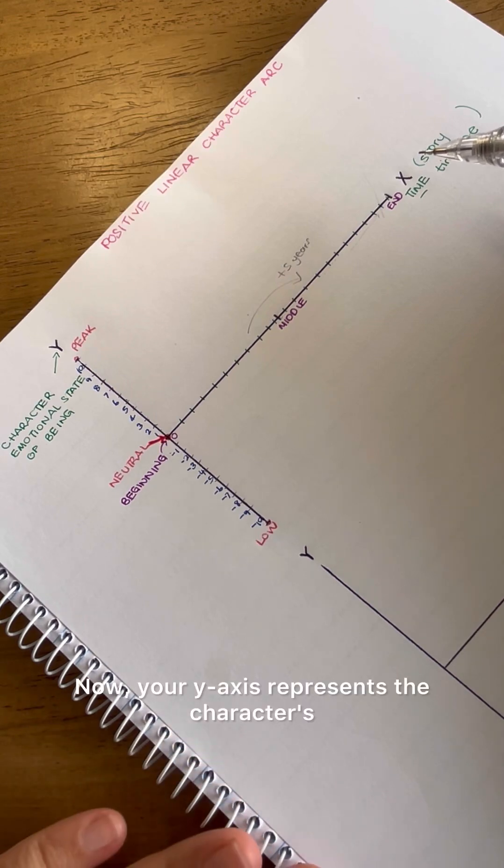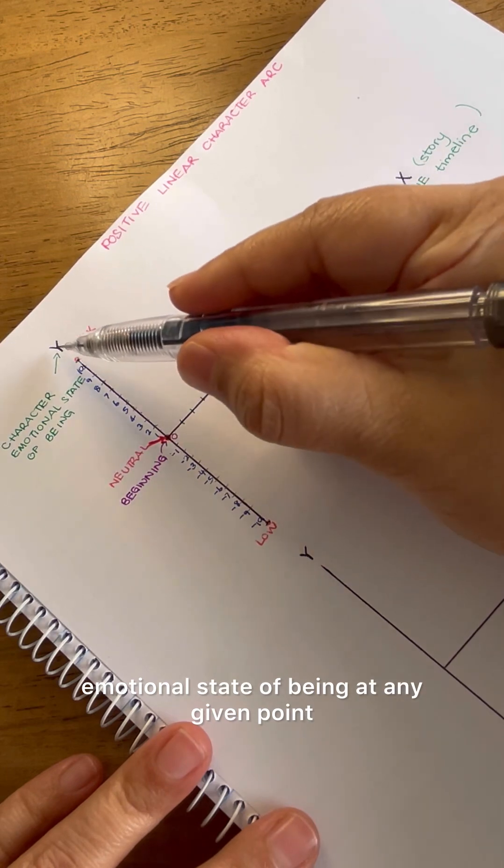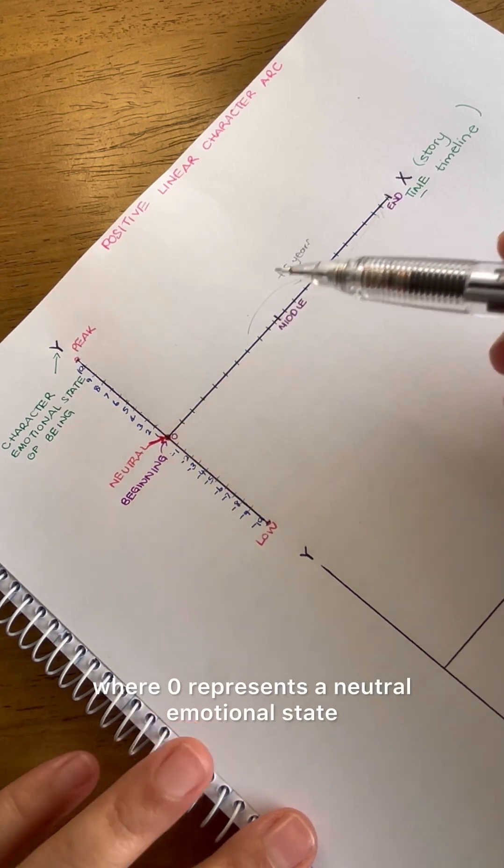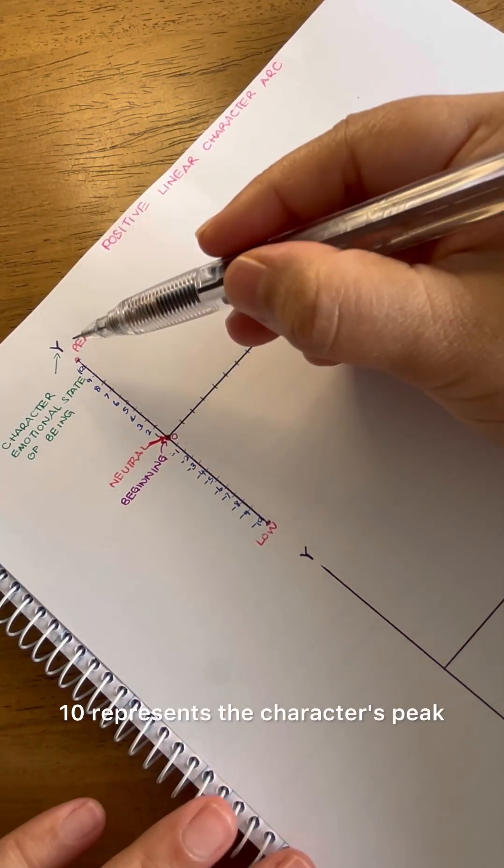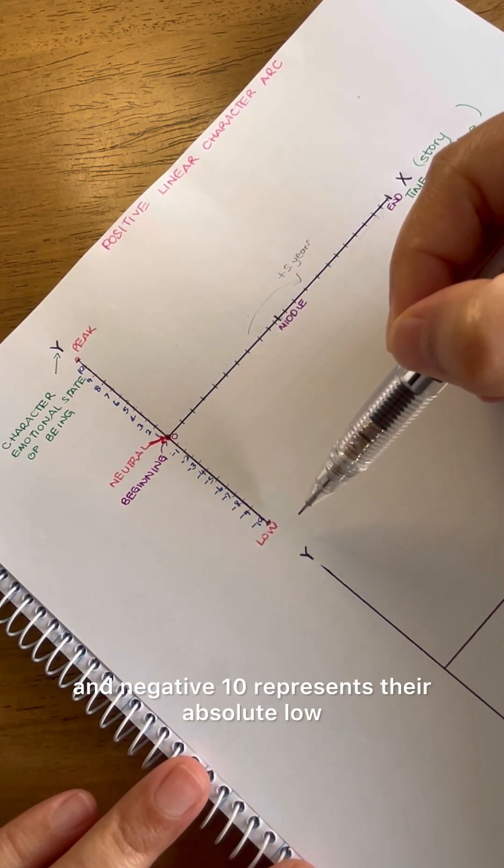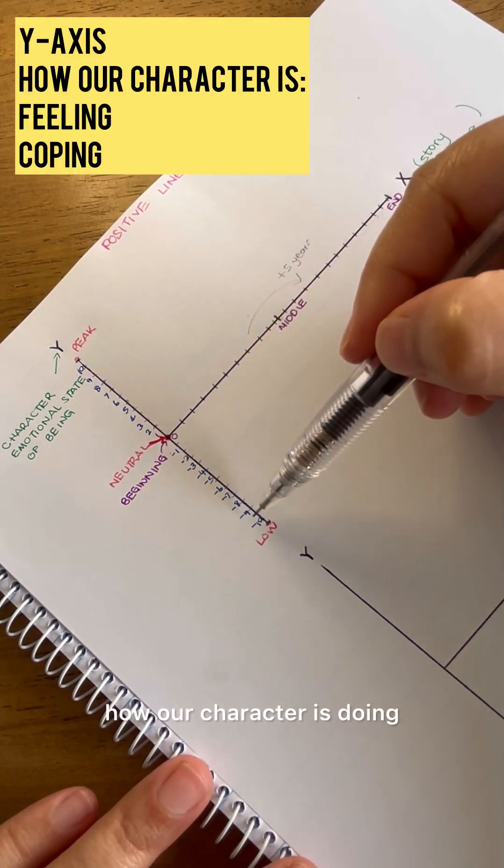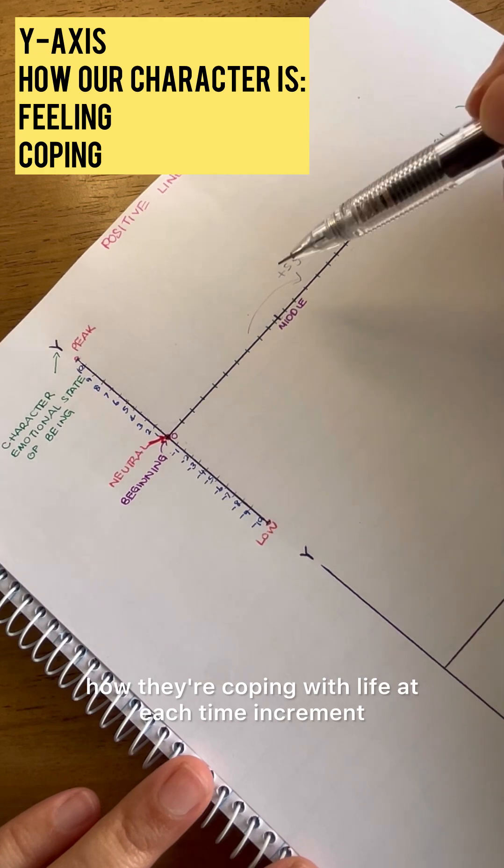Now, your y-axis represents the character's emotional state of being at any given point along the story timeline. I've scaled it arbitrarily, where 0 represents a neutral emotional state, 10 represents the character's peak, and negative 10 represents their absolute low. So, along this axis is where we measure how our character is doing, how they're feeling, how they're coping with life at each time increment.